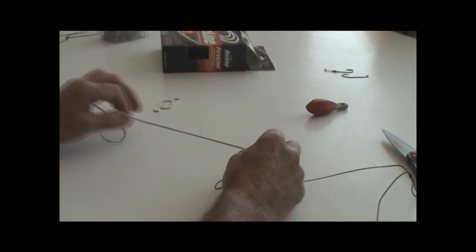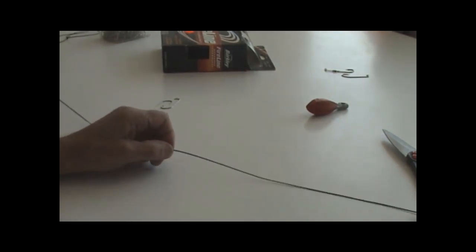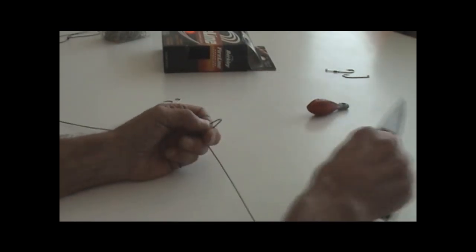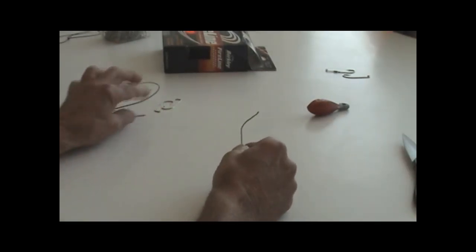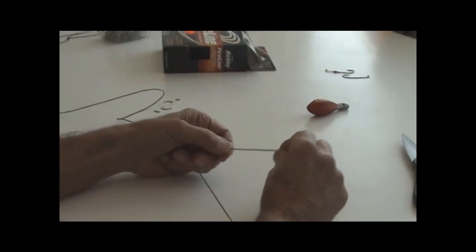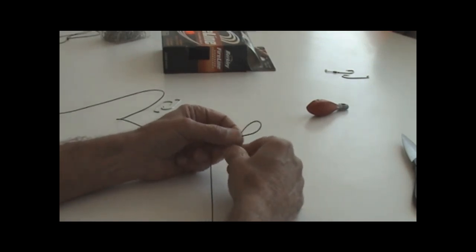In order to finish, go up your line, maybe a foot or two, snip it. And then, if you saw the first video, tie an end loop. Tie an end loop by going behind.